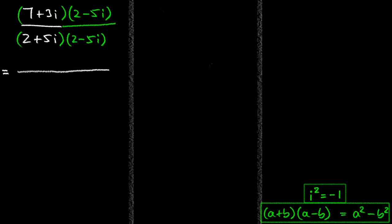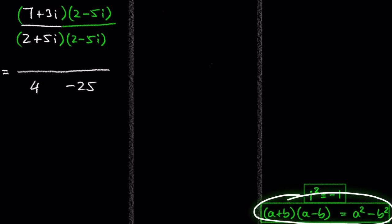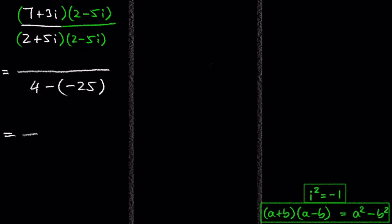Let's look at the bottom of the fraction first. We square the 2, which is 4, and we square the 5i, which is negative 25. And 4 minus negative 25 is 29. For the top of the fraction, unfortunately we have to use the FOIL method and can't use the shortcut, because the second complex number is not the conjugate of the first complex number.